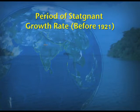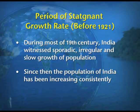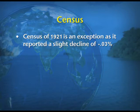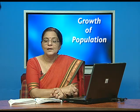The first stage is the period of stagnant growth rate, before 1921. During most of the 19th century, India witnessed irregular and slow growth of population. The census of 1921 is an exception as it reported a slight decline of minus 0.03%, and therefore 1921 is called a demographic divide year. Certain factors caused this negative growth in 1921.